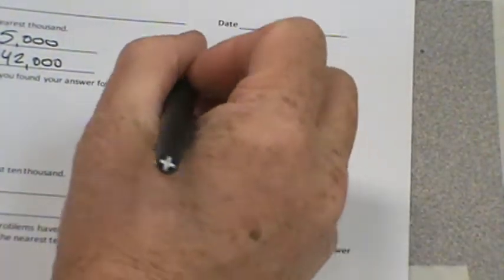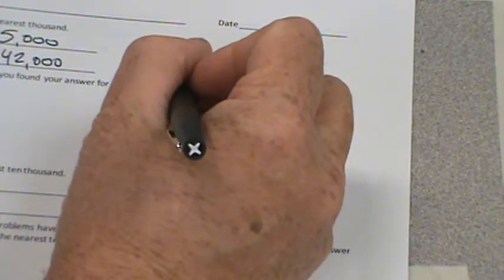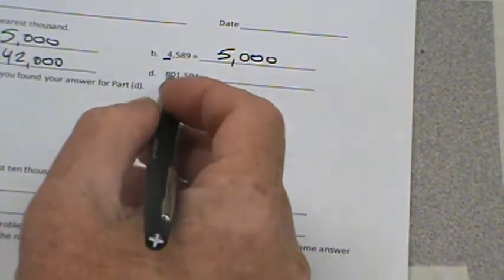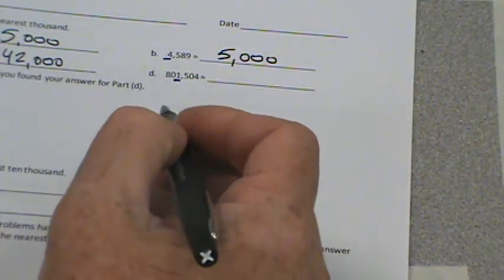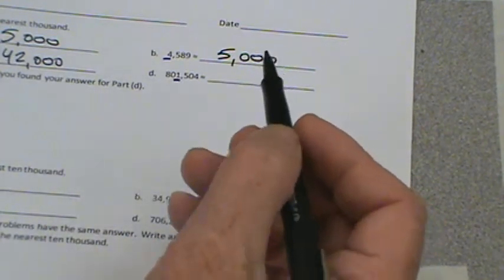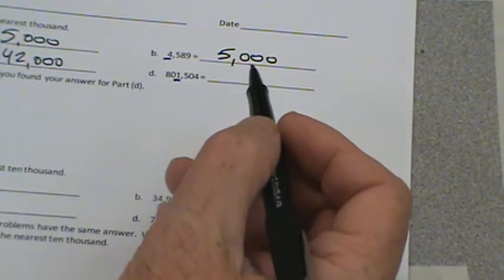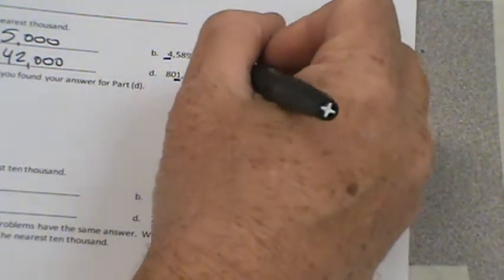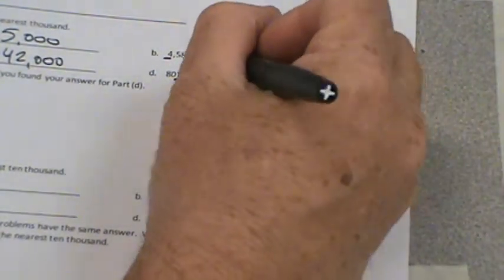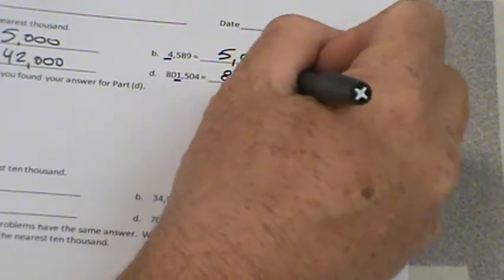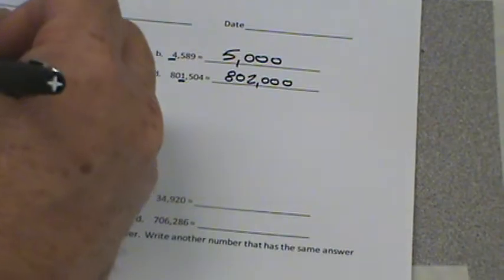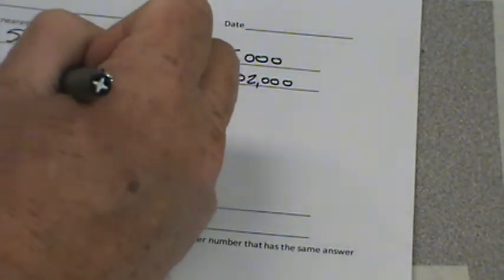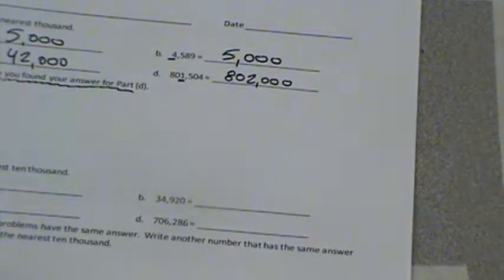Let's head on over here. Remember, we're going to the closest 1,000, the nearest thousand. So is 801,504 closer to 802,000 or 801,000? Well, it's 504, so it's 4 more than the midpoint. So we would round up to 802,000. Now we're going to explain how you found your answer for part D.